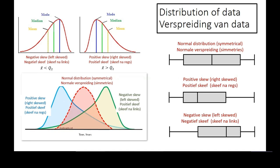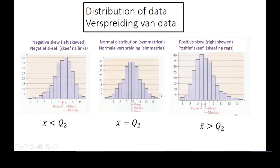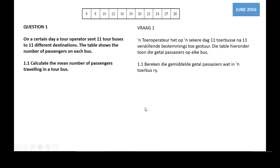Negatively skewed means skewed to the left; positively skewed means skewed to the right. There appear to be some labelling errors in the reference graphs shown, so please focus on understanding the concept: we're going to use the box-and-whisker in exams, not these bell graphs. Now it's time to get out your calculator and work through an example.